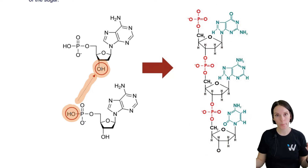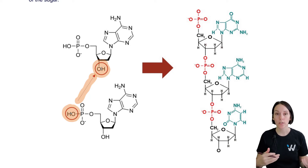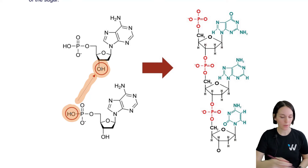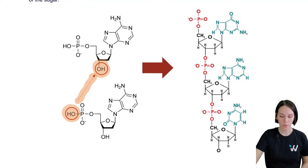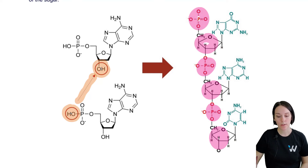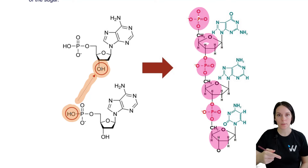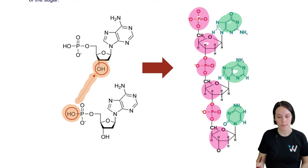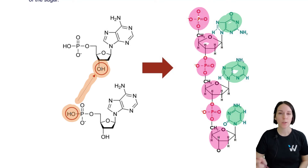When you string these nucleotides together into a long chain, you end up with a phosphate-sugar backbone. The phosphates and sugars are joined together — phosphate, sugar, phosphate, sugar, phosphate, sugar — making up the phosphate-sugar backbone. Hanging off of this backbone on one side are all of the nitrogenous bases.